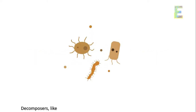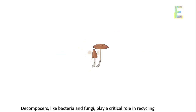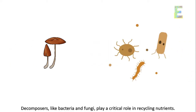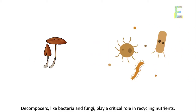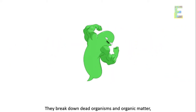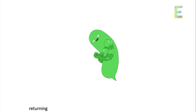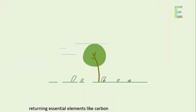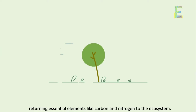Decomposers, like bacteria and fungi, play a critical role in recycling nutrients. They break down dead organisms and organic matter, returning essential elements like carbon and nitrogen to the ecosystem.